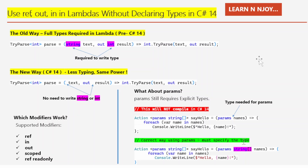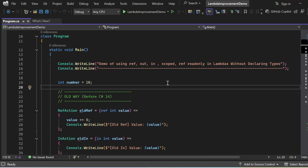You must be thinking — okay, these modifiers are getting supported but not params, why? The reason is the compiler needs to know exactly how to interpret the parameters, and without the type it can't pack the arguments into an array properly. That's why params still requires full type info even in C# 14. Okay, let's switch to Visual Studio and see all these things in action.